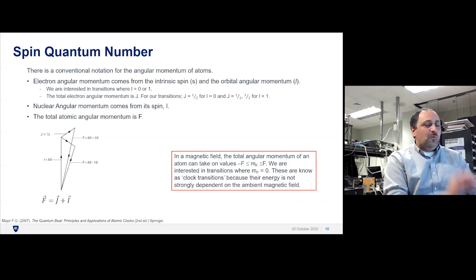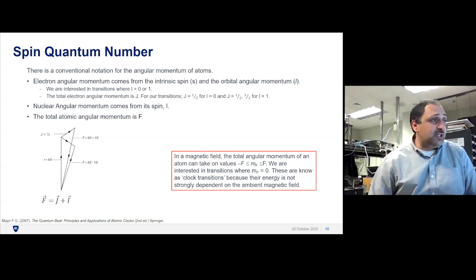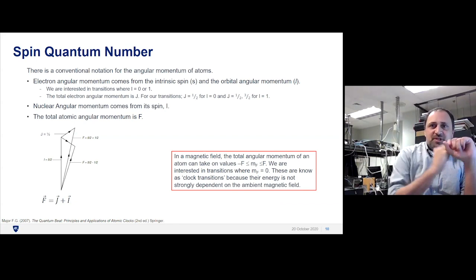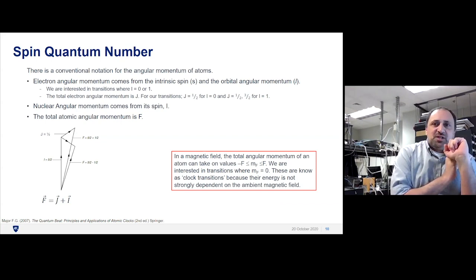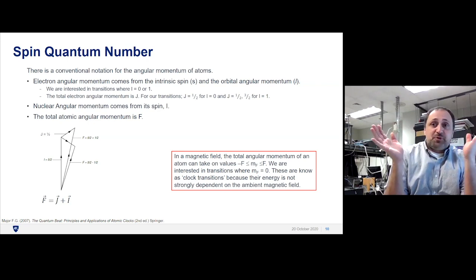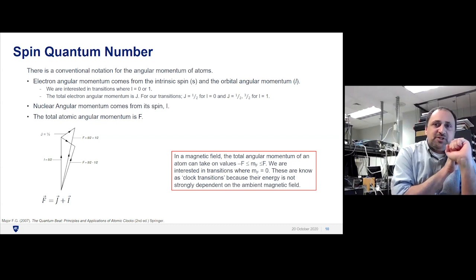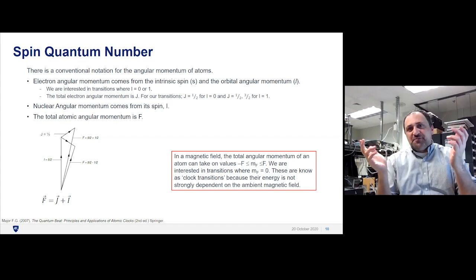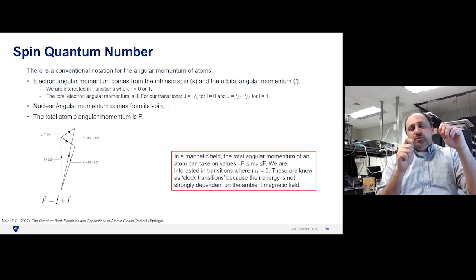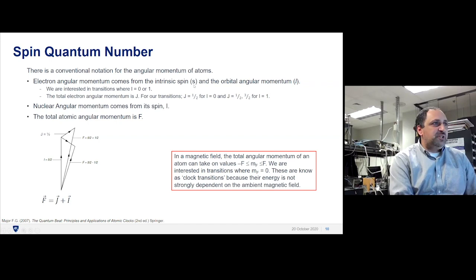One last thing before we start talking about specific devices. We talked about how the electron has spin, how atoms have spin. Now we discuss how do you describe the spin of an atom made up of electrons, protons, and neutrons. The electron, in addition to having spin, has angular momentum associated with its orbit—its angular momentum state with regards to the nucleus.